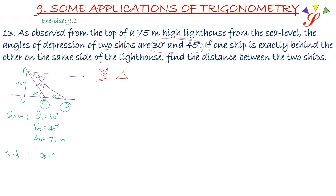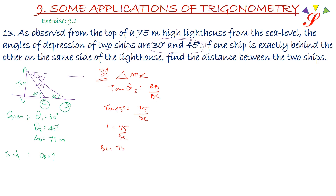Let's take the first triangle ABC. Tan theta 2 is equal to AB upon BC. So tan 45 is 1, which is equal to 75 upon BC. So BC is equal to 75 meter. Let's say CD is X.